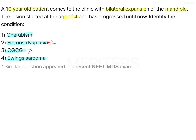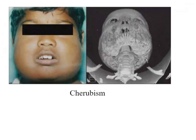Ewing sarcoma is a tumor of young individuals, starting from around 10 to 20 years of age, usually seen in long bones — not in bilateral progression, and definitely not starting at the age of 4. So we can eliminate Ewing sarcoma.